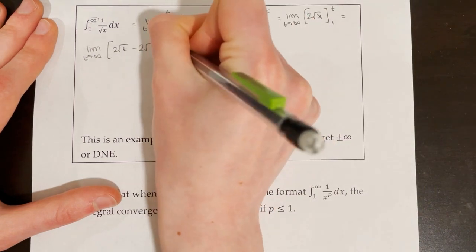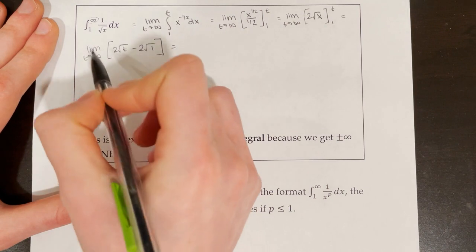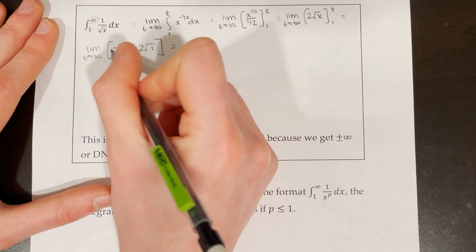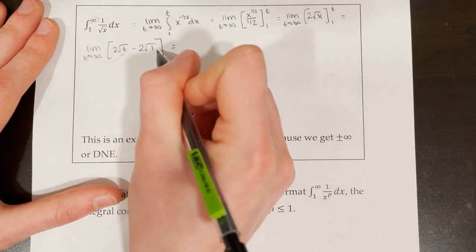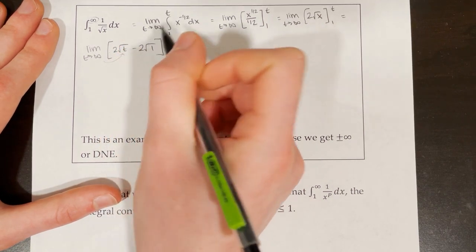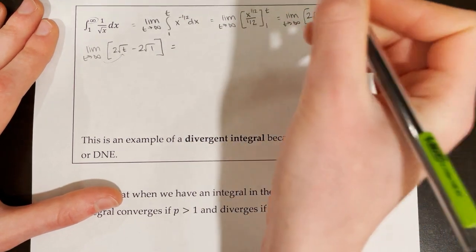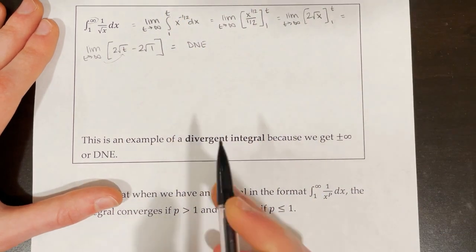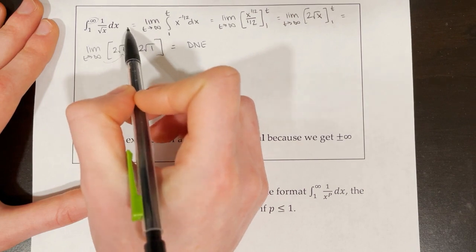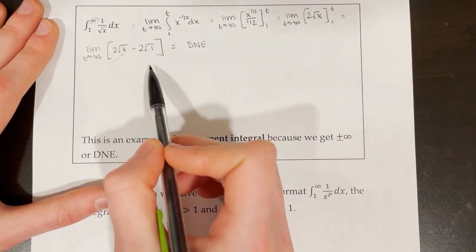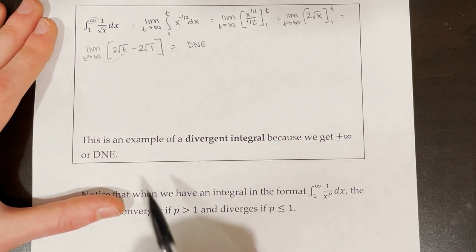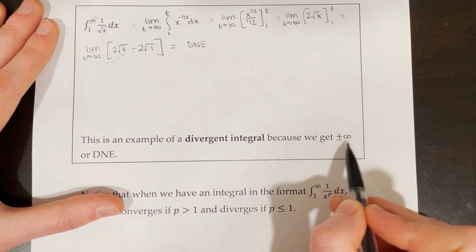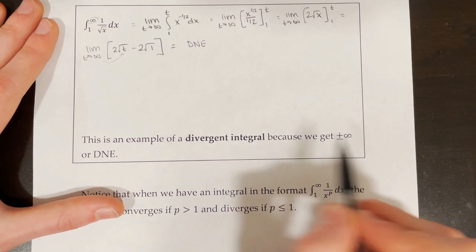Now we think about what happens if we plug in infinity for t. The square root of infinity is still infinity, so 2 times the square root of infinity is infinitely large, minus 2 — which is still infinitely large. So this would be equal to infinity. Since something can't really equal infinity, our answer does not exist. The area under the curve of 1 over rad x from 1 to infinity approaches infinity — our area is not bounded. This is an example of a divergent integral because we got positive infinity.